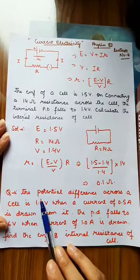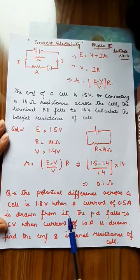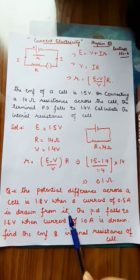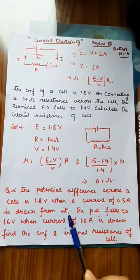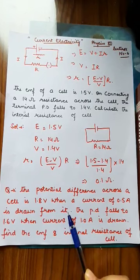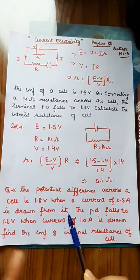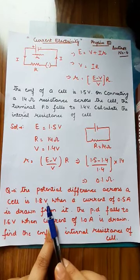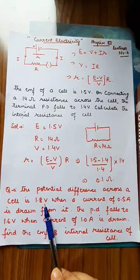Our next numerical: the potential difference across a cell is 1.8 volt when a current of 0.5 ampere is drawn from it. The EMF of a cell is when the current in the circuit is 0, or when the circuit is open. When the circuit is closed and there is a current in the circuit, then that potential difference is known as terminal potential. In this case, the current is 0.5 ampere, so 1.8 volt is the terminal potential.